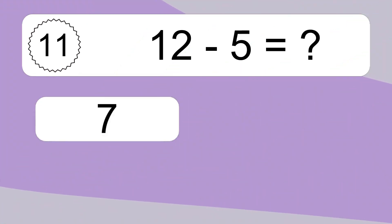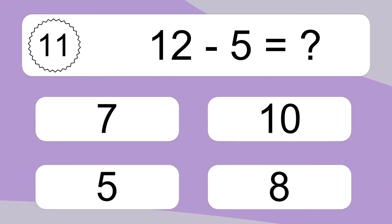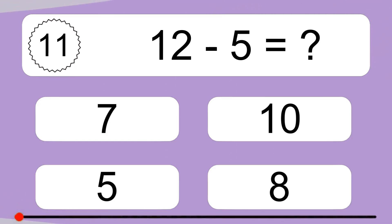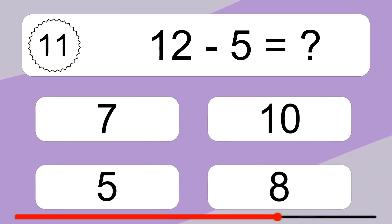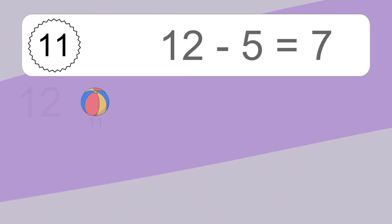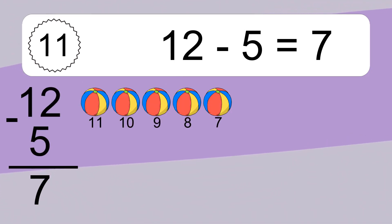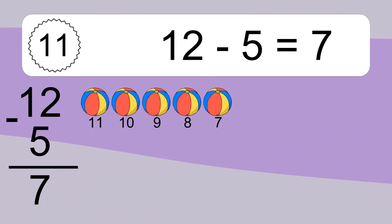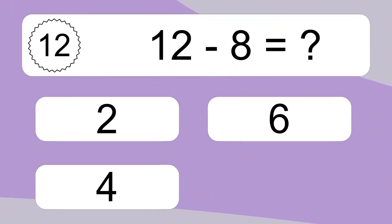12 minus 5 equals what? 12 minus 5 equals 7. Let's count it: 11, 10, 9, 8, 7.